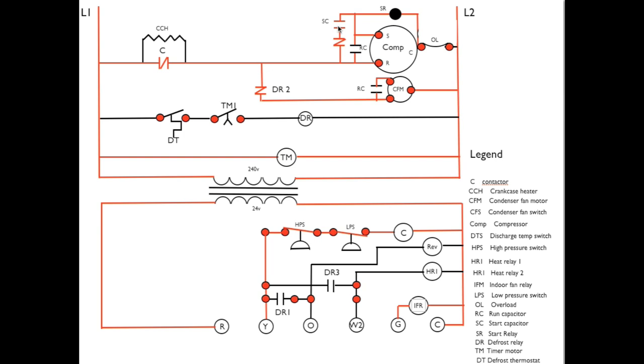Power flows through the normally closed contacts and energizes the compressor. Then power will pass to the normally closed DR2 contacts to energize CFM. The timer motor will be on all the time, and that's the sequence for first stage heat of the heat pump.